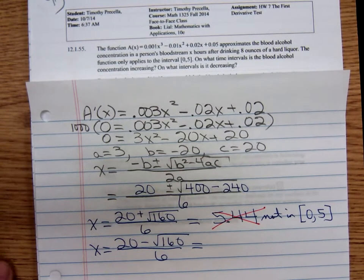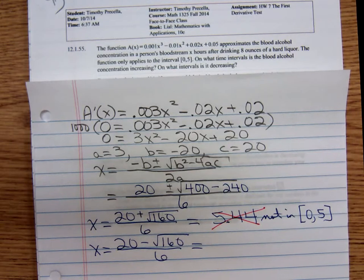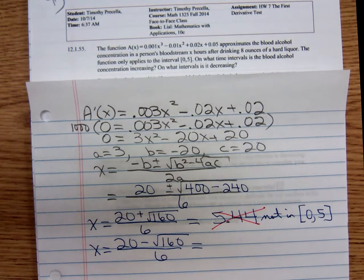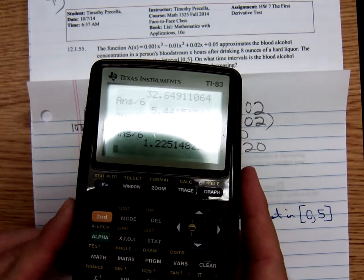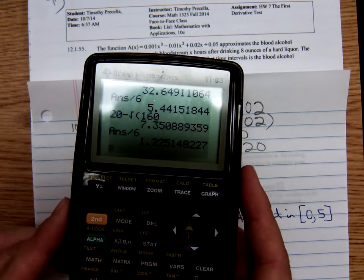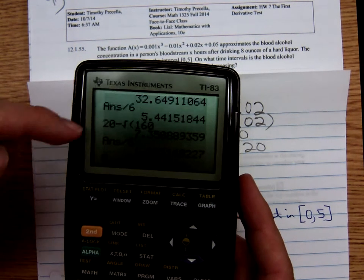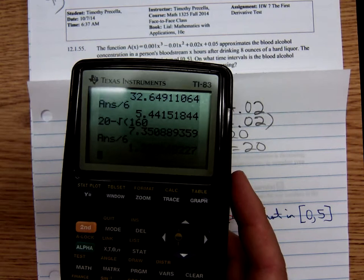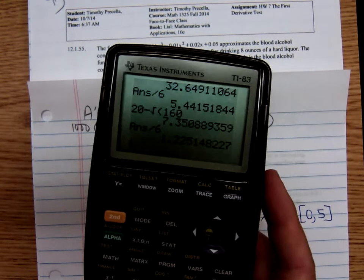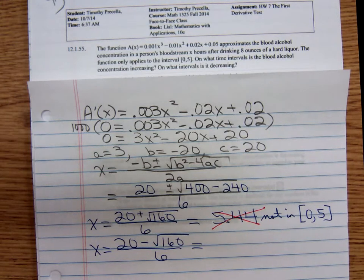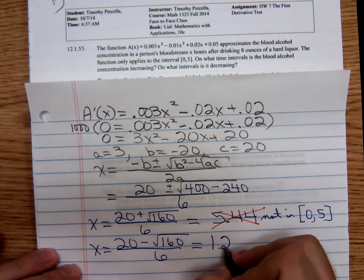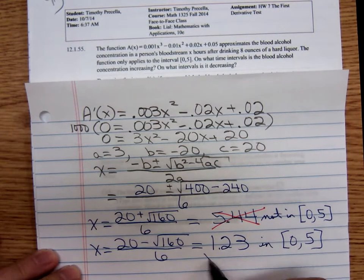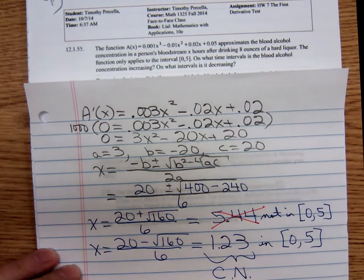And we have our 20 minus the square root of 160. Be careful, make sure your calculator does what you want it to do. You'll notice when I'm punching these things in I generally try to evaluate the numerator and then I hit equals and then I divide by that denominator to make sure the calculator is doing what I want it to do. So I'm getting a 1.23 and that is in the interval from zero to five, so this is our critical number. It's the only critical number we have in the problem.